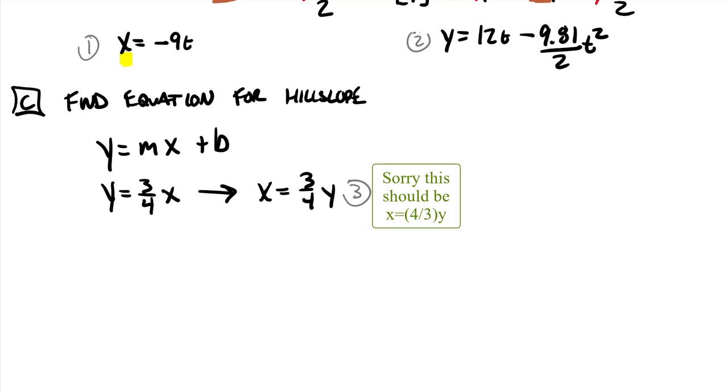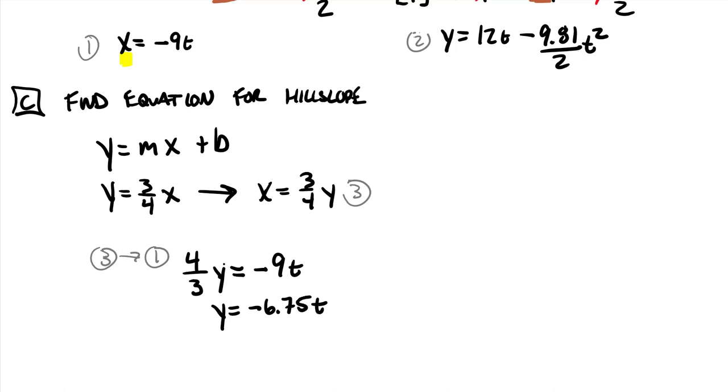And so I am going to essentially put 3 into equation 1. And in doing so, I end up with 4 thirds y equal to negative 9t. So if I solve for y, I can say that y is equal to negative 6.75 times t. And then I'm going to put this term into equation 2. So I'm going to call this one number 4. And so I'm going to put 4 into 2. Now I'm just kind of working through the algebra here. And we end up with negative 6.75 equal to 12 times t minus 4.905, which is that 9.81 divided by 2 times t squared.